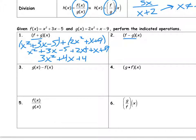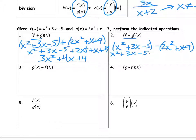For subtracting, order matters — it's telling me to do f first. When I do that, it changes my signs for the second parentheses: minus 2x squared minus x plus 9. So I get negative x squared plus 2x plus 4.